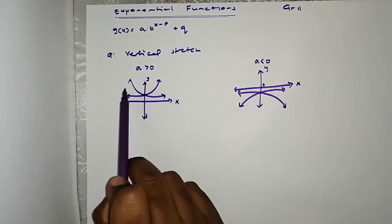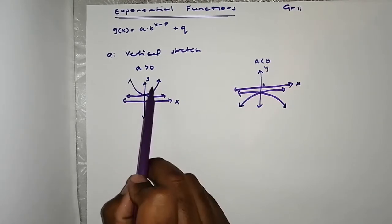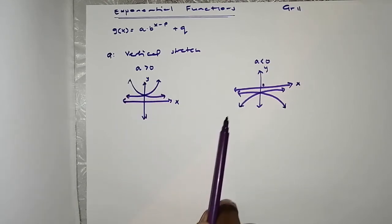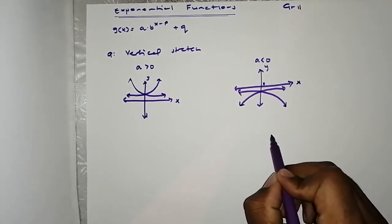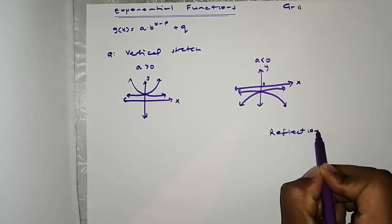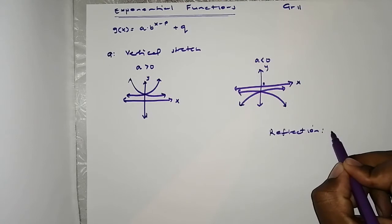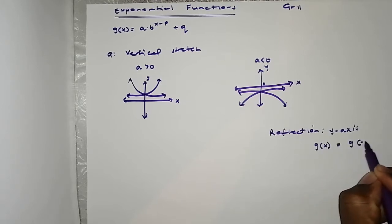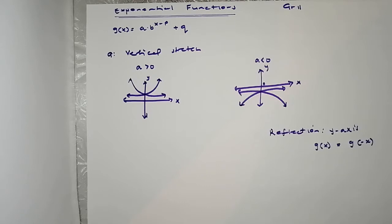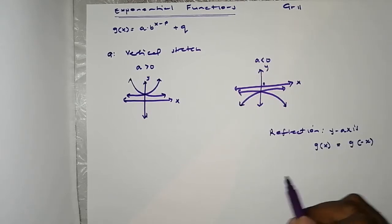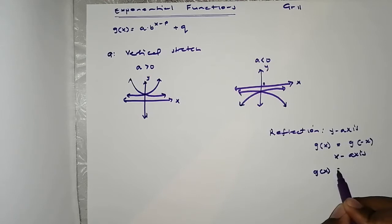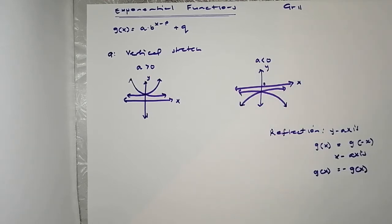Look at this graph and this one — it's as if this graph is reflected on the Y-axis. And look at these two — it's as if these graphs are reflected on the X-axis. I'd like to put it into perspective: when you are reflecting on the Y-axis, G of X becomes G of negative X. And when you are reflecting on the X-axis, G of X is transformed to negative G of X.